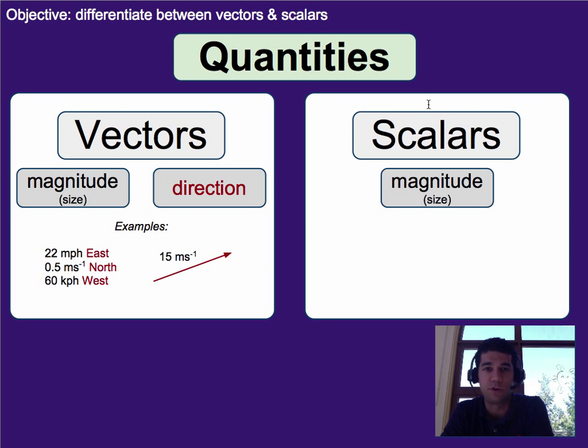Before we get to that, I want to remind you of the difference between vectors and scalars. Vectors have magnitude and direction. That means they have a number such as 22 and the units, and then the direction such as east.